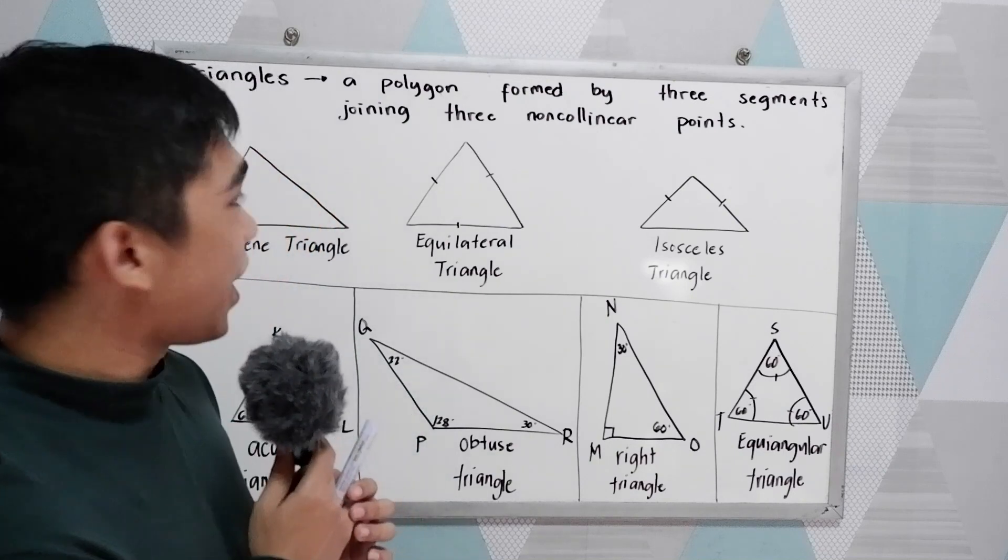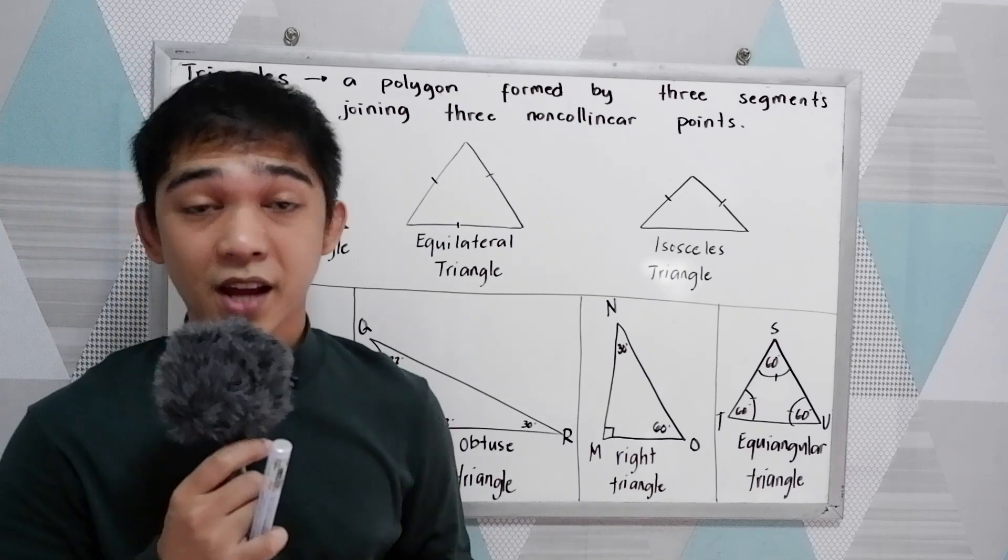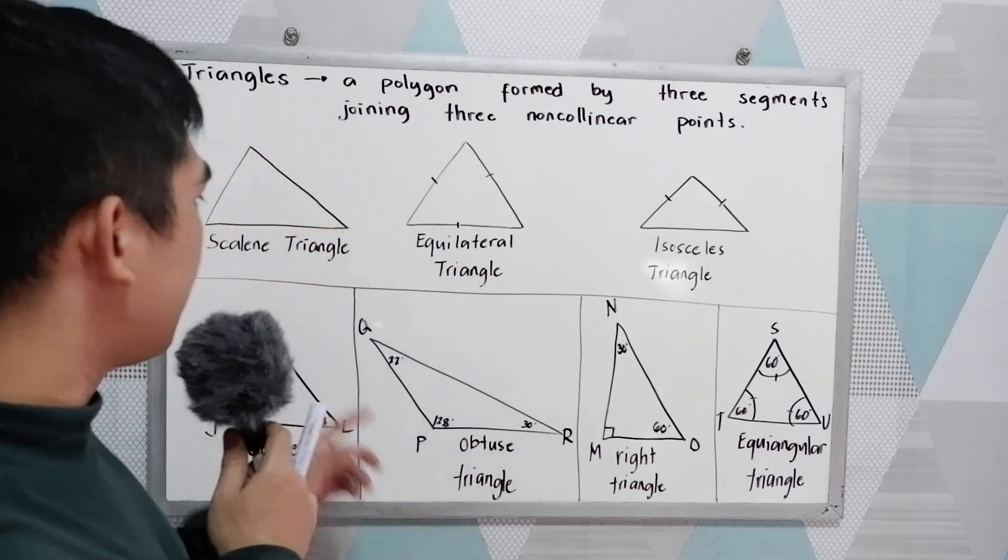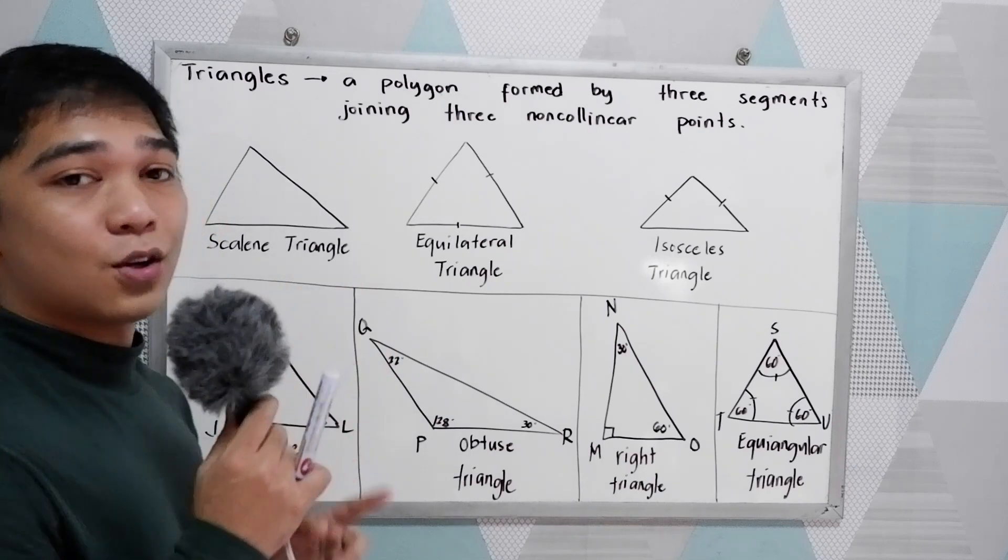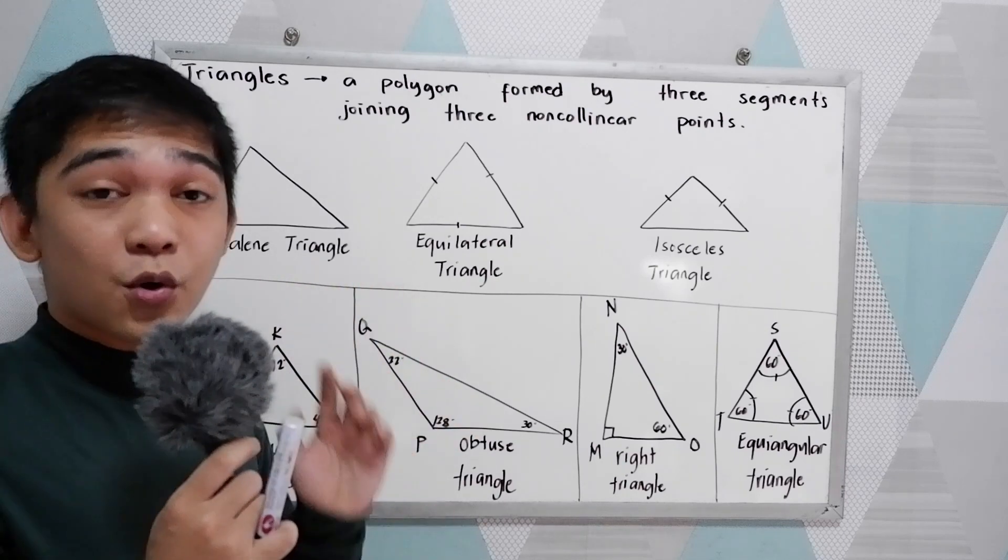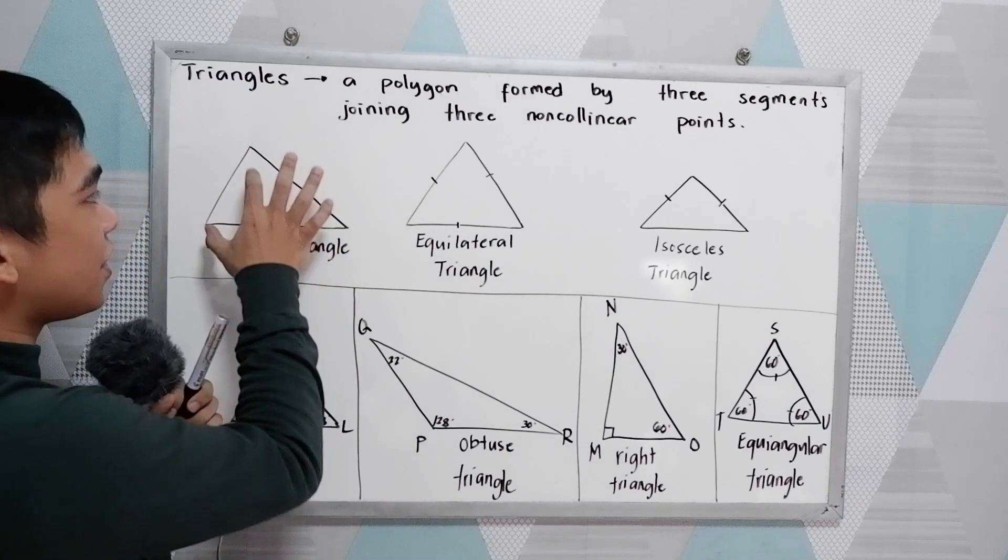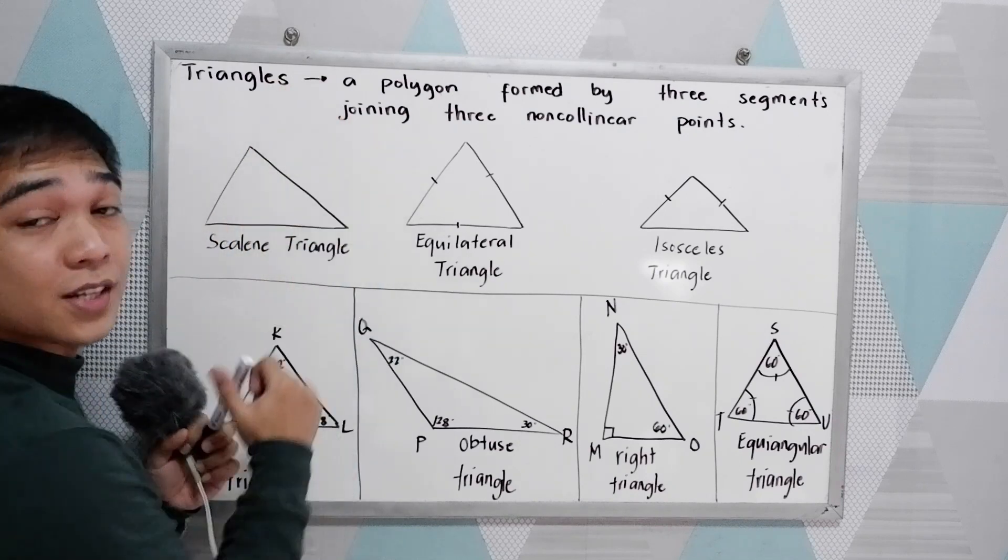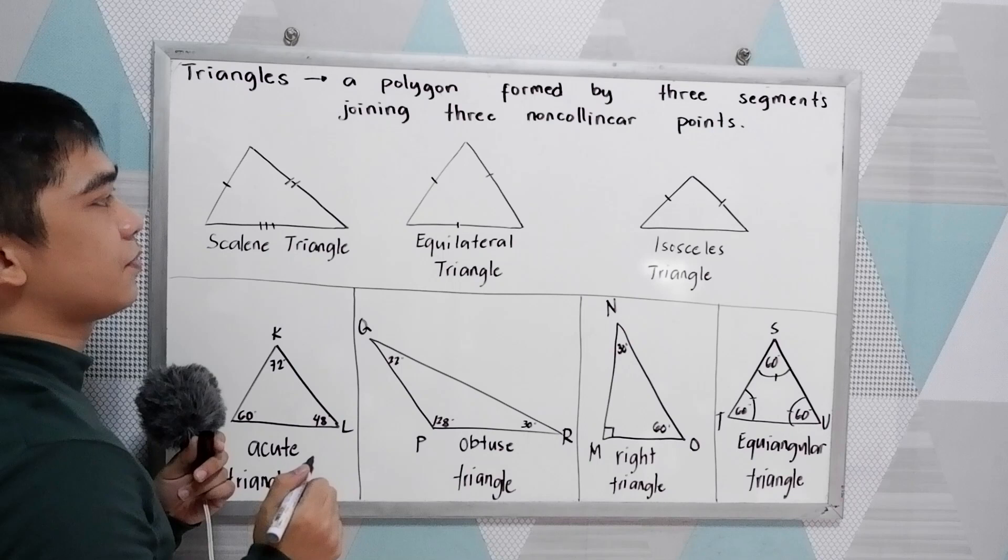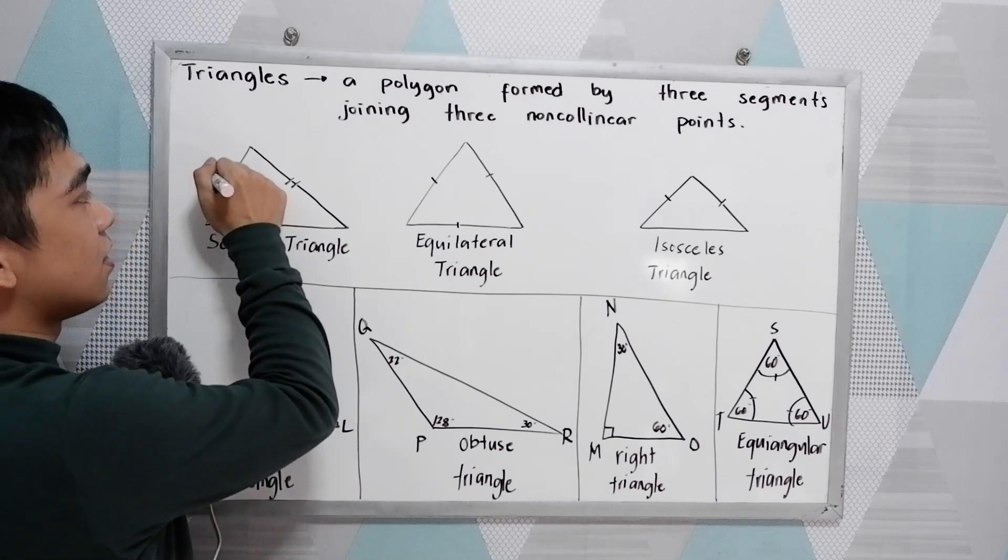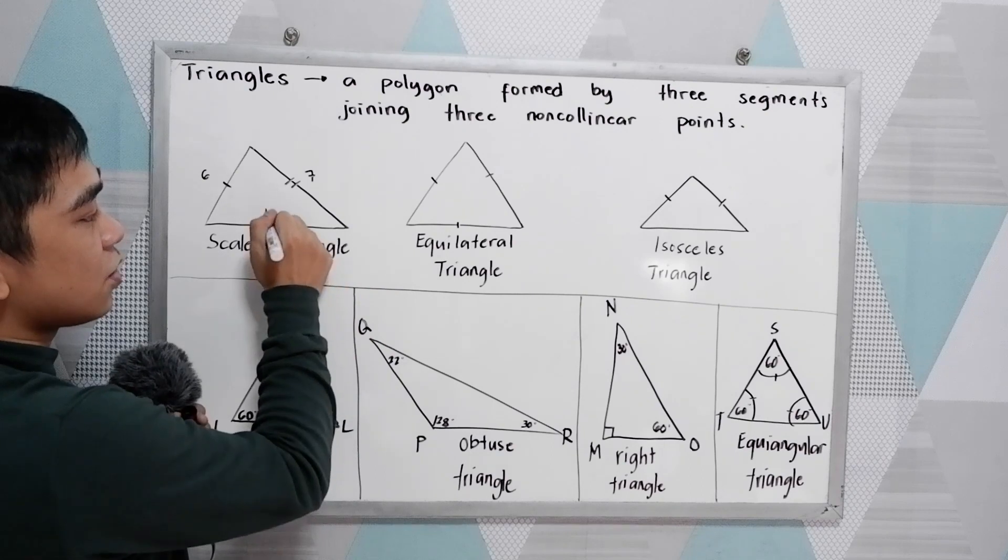Triangles are named according to their sides. We have scalene triangle. When we say scalene triangle, no sides are congruent or no sides are equal. If you notice, we have different lengths in our sides, so they are not congruent. It can be 6, 7, or it can be 12.